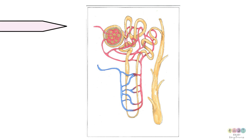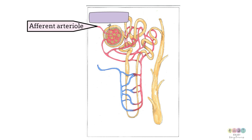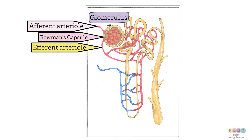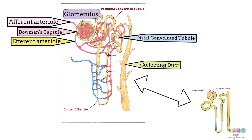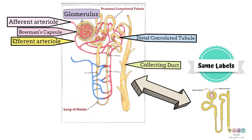Here's an alternative diagram of the nephron, a bit more complex because it shows the blood supply. The afferent arteriole leads into the glomerulus sitting within Bowman's capsule, then we have the efferent arteriole. From Bowman's capsule we go into the proximal convoluted tubule, down into the loop of Henle with its descending and ascending limbs, then into the distal convoluted tubule, and into the collecting duct. Other nephrons will feed into the same collecting duct. The simplified diagram has exactly the same labels and helps you learn the processes.